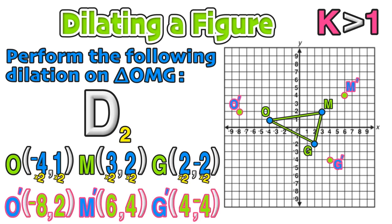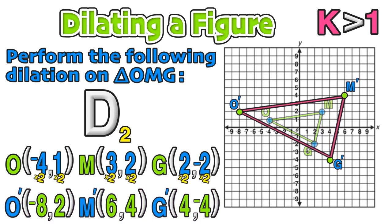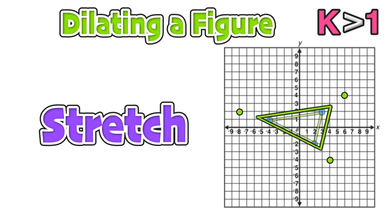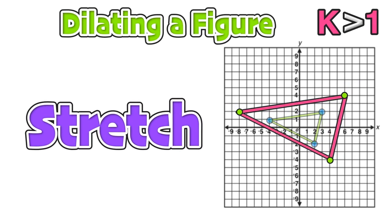You can go ahead and plot those new points, O prime, M prime, and G prime, and construct the image of the figure that is twice as large as the pre-image. Now let's visualize how when the scale factor is greater than 1, the image is stretched out to a larger size.